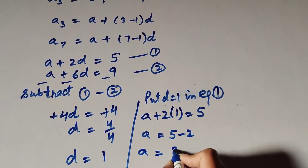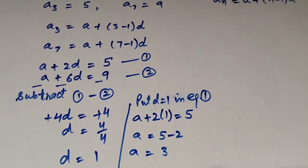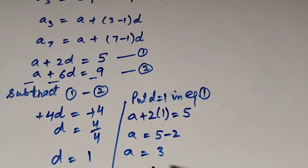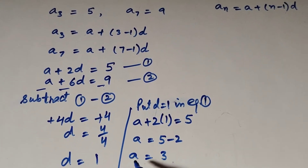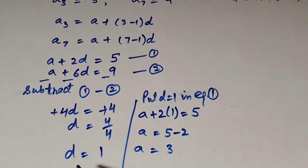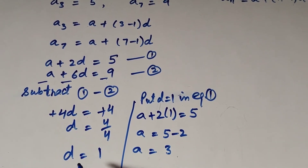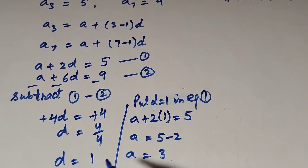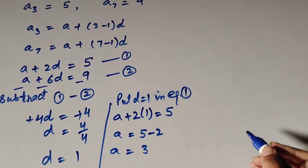Therefore a is equal to 5 minus 2, which equals 3. So the first term a is equal to 3 and the common difference d is equal to 1. Now we write the AP series.